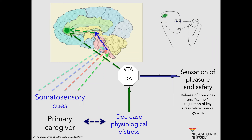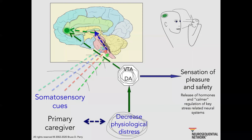This is a slide we use to show how an attentive, attuned, responsive caregiver meets the needs of the physiologically distressed, hungry, thirsty, cold infant — activating certain neural networks in the brain. The systems processing the somatosensory cues of that human being are activated at the same time as the neural networks involved in pleasure and the neural networks involved in regulation. This three-part set of associations is what happens when the caregiver is present, attentive, attuned, and responsive.